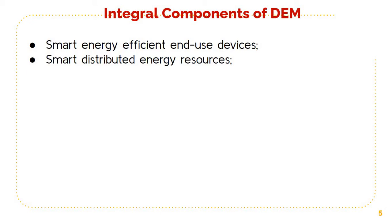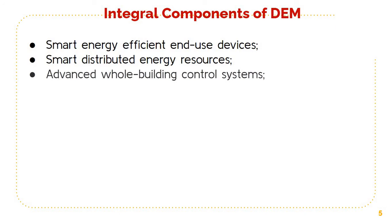Secondly, smart distributed energy resources. Various distributed energy resources need to be smart, such as generation devices like PV, diesel engines, microturbines, and fuel cells that provide power along with the grid. Then on-site electric energy storage devices such as batteries and flywheels — devices that are dynamically controlled to supply base load, peak shaving, temporary demand reductions or power quality, and devices that are dynamically controlled to sell excess power back to the grid.